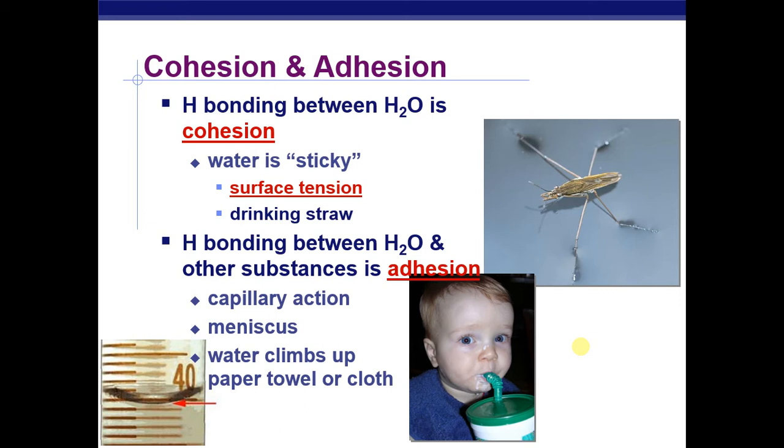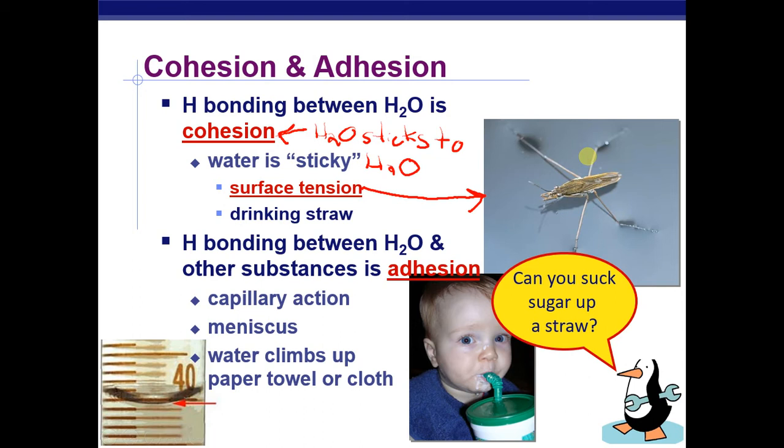So hydrogen bonding that occurs between water molecules gives rise to cohesion. Cohesion is water sticking to other water. Water is sticky—cohesion is when water sticks to other molecules of water. And it gives rise to surface tension. That water strider standing on the water—there is attraction between those surface molecules, and that attraction, that force of attraction, prevents very light things from falling through. Like some people might be able to float a paper clip on water. That has to do with water's surface tension.